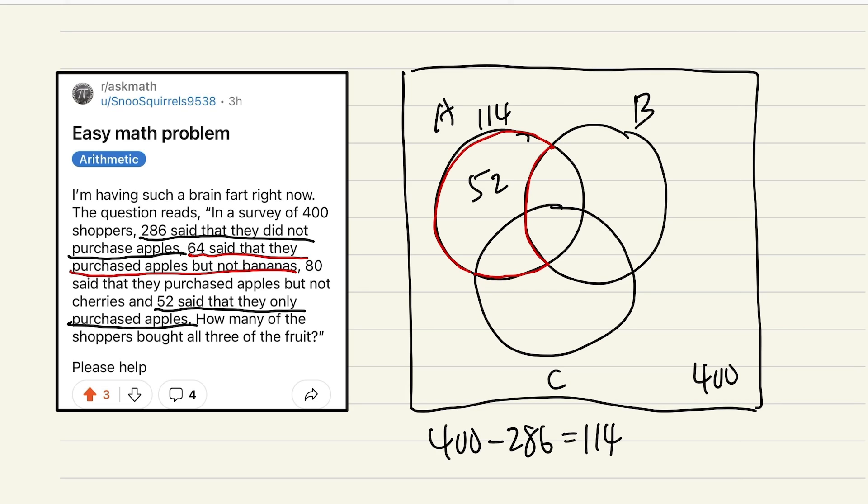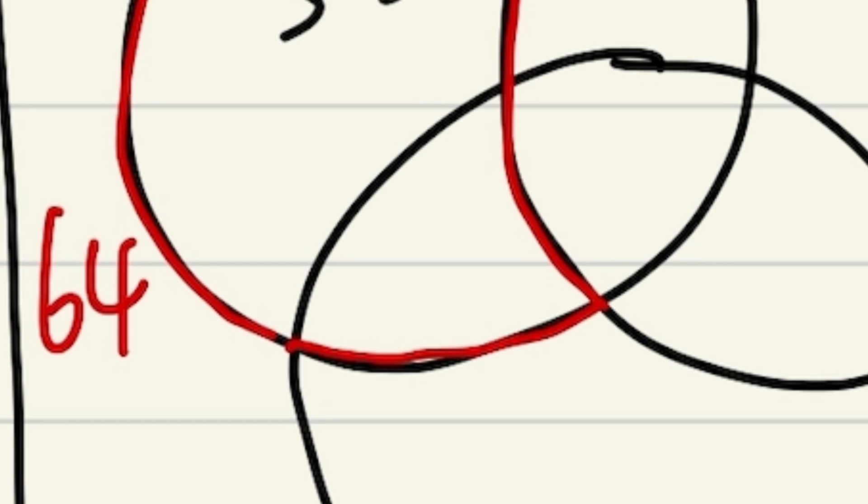And then if you look at the red part, all together we must have 64. That means 52 plus this much has to be added to 64. So what's the question mark? It's just 64 minus 52, and let me just write that down real quick, 64 minus 52, which is 12 right here.